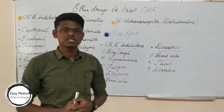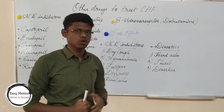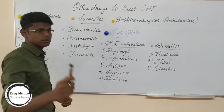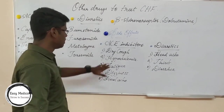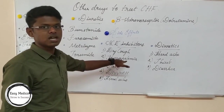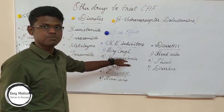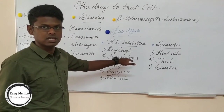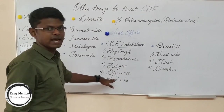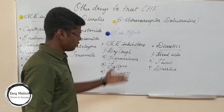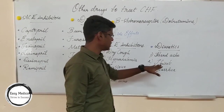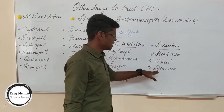Now for the side effects of these drugs. Side effects of ACE inhibitors are dry cough, hyperkalemia — which is an increased potassium level in the blood — fatigue, dizziness, and headache. Side effects of diuretics include headache, thirst, and diarrhea.